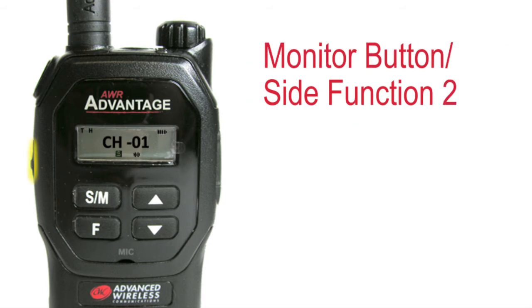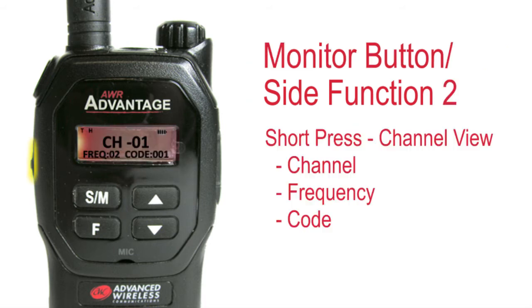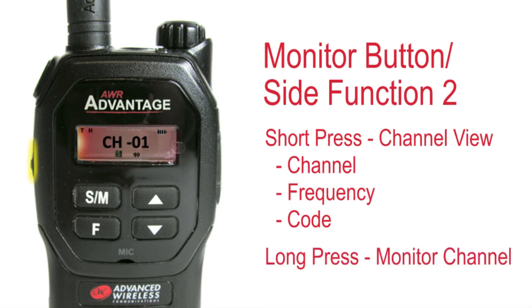This is the monitor button, which is also known as side function two. A short press will give you the channel view, showing your frequency and code numbers, while a long press will monitor the channel for activity.